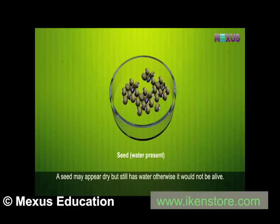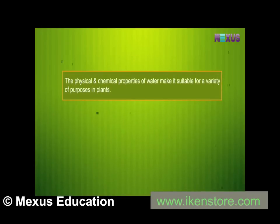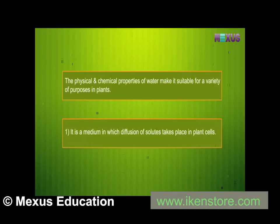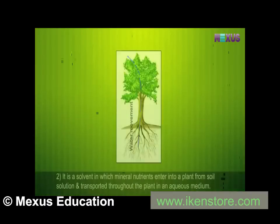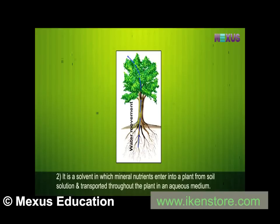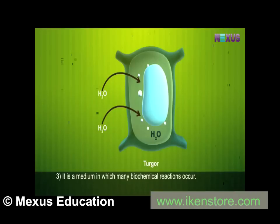A seed may appear dry but still has water; otherwise it would not be alive. The physical and chemical properties of water make it suitable for a variety of purposes in plants: it is a medium in which diffusion of solutes takes place in plant cells, and it is a solvent in which mineral nutrients enter into a plant from soil solution and are transported throughout the plant in an aqueous medium.